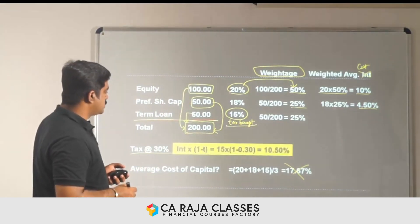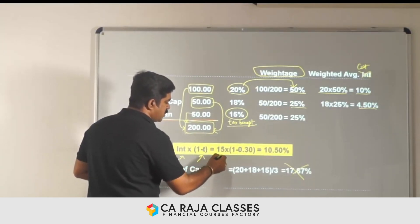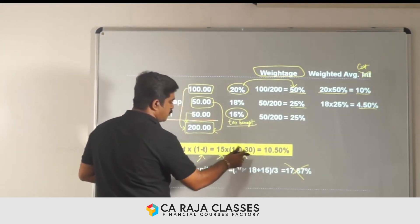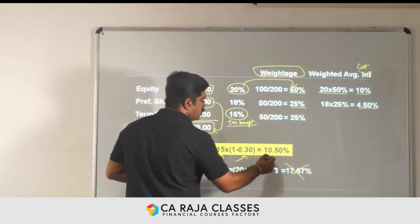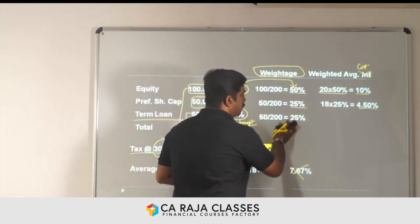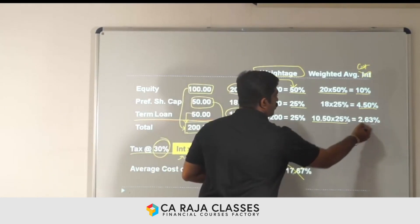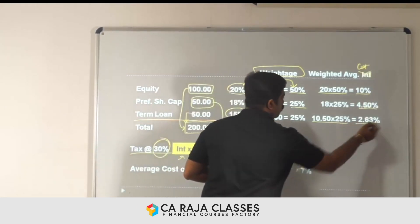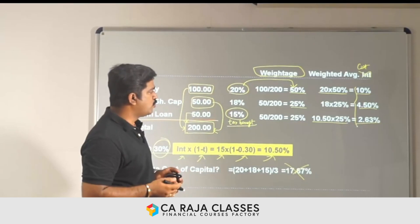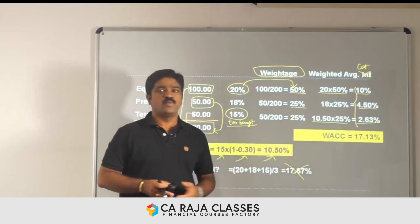For debt, I take interest multiplied by (1 minus t): 15% multiplied by (1 minus 0.3) equals 10.5%. So my effective interest rate is 10.5%. Multiplying by the weightage of 25% gives 2.63%. Totaling everything: 10 plus 4.5 plus 2.63 — my weighted average cost of capital is 17.13%.